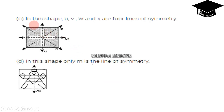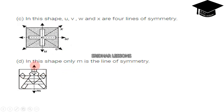Question C: in this shape we have four lines of symmetry — U, V, W, and X. For question D, only M is the line of symmetry. That means cutting this picture into two halves with the help of line M, which is cut in the vertical direction.